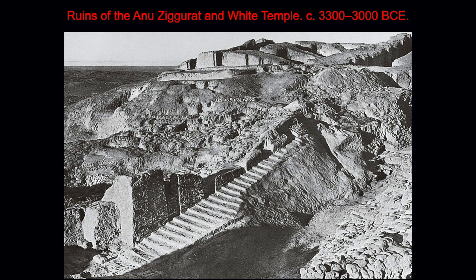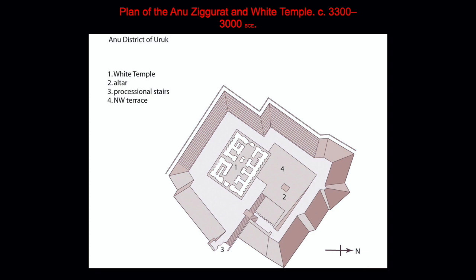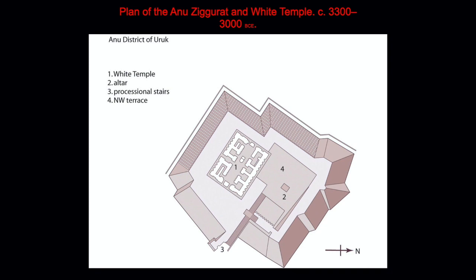Ziggurats were complexes of related functions — people could visit for different purposes. Unlike Egyptian pyramids, which were just giant tombs, ziggurats had many active functions. One hypothesis is that during rituals, a procession of people would wind their way up the ziggurat making numerous turns, which would increase anticipation and mimic a spiritual journey. Another hypothesis is that ziggurats were symbolic mountaintops, reflected in writings stating that the gods resided in the mountains.